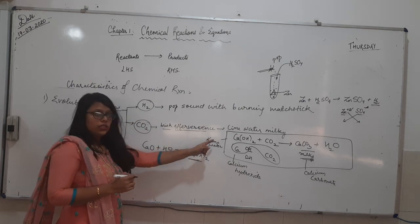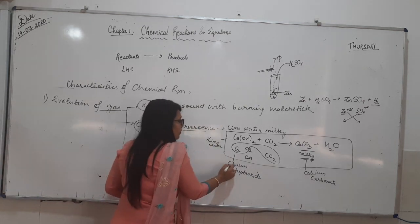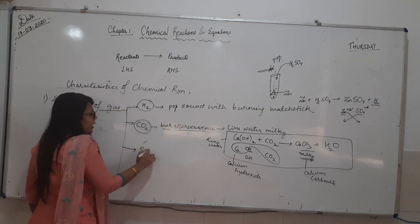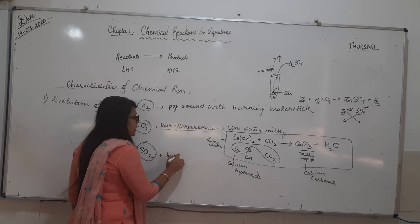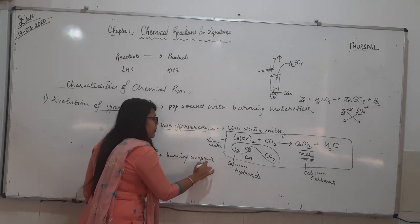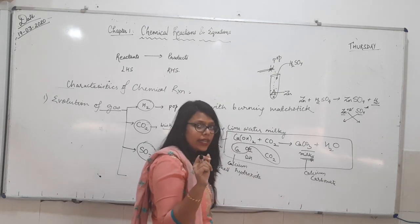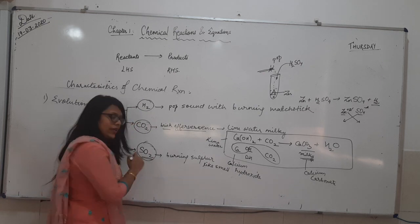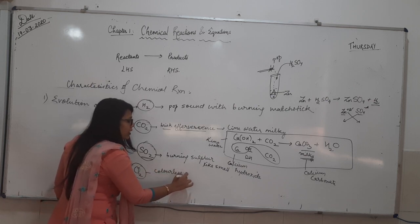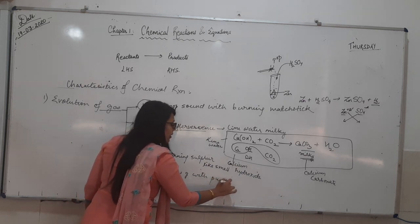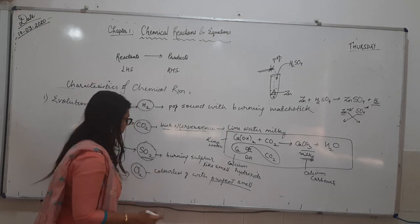You should know both reactions for answering this question. Moving ahead, we have the condition of sulphur dioxide gas. How do we determine SO2 gas? It can be determined by its burning sulphur-like smell — like when you light a matchstick and smell it. That burning sulphur-like smell is produced due to sulphur dioxide gas. Next, for Cl2 — chlorine gas — it will be a colourless gas with a pungent, suffocating smell.